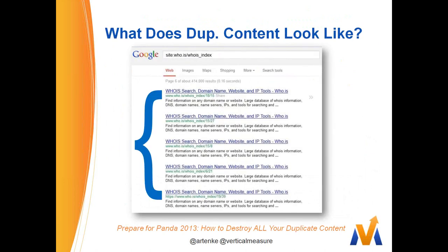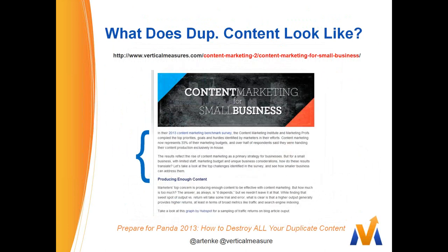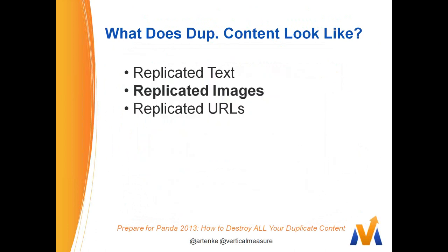So what does duplicate content look like? Replicated text, images, URLs. Here's a site command search for a particular site — all you see is the same stuff, everything is the same except the URL, which is only slightly different. You have to be careful with WordPress: the default settings on tag pages or category pages can put your duplicate content in two places at once. You'll see the first two paragraphs of a post show up on both the blog category page and the actual post page — sometimes in three different places.